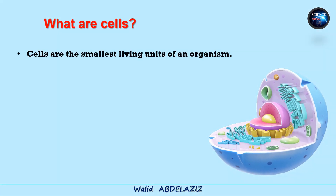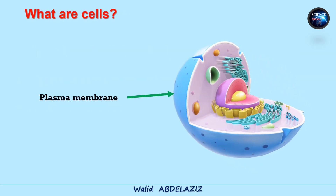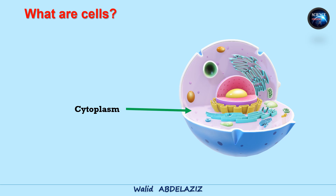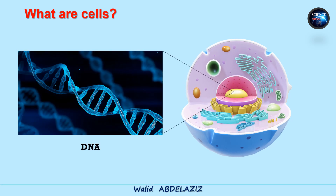Cells are the smallest living units of an organism. They are the structural and fundamental units of life. All cells have three things in common, no matter what type of cell they are: a plasma membrane, which separates the inside of the cell from its environment; cytoplasm, which is a jelly-like fluid; and DNA, the cell's genetic material.